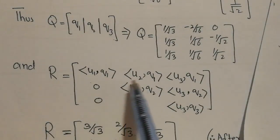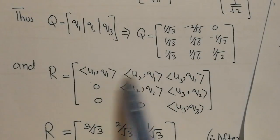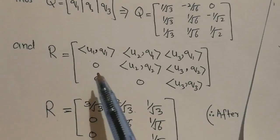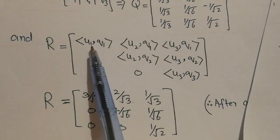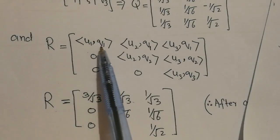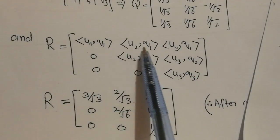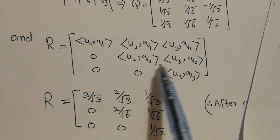We already have the formula for R. We just replace the values and take their dot products. I will write down the answers directly. The dot product between U1 and Q1 is 3√3. The dot product between U2 and Q1 is 2/√3. Similarly, I calculate all dot products to get matrix R.